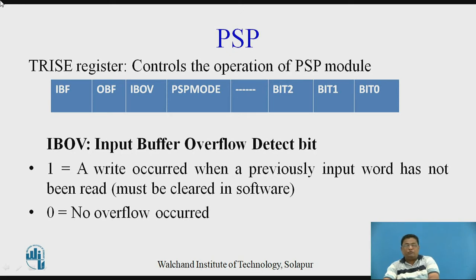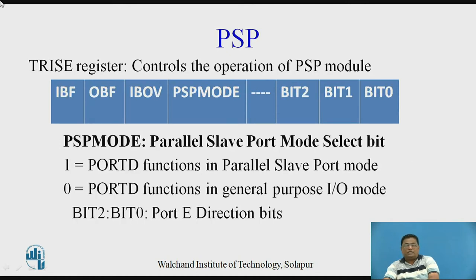IBOE equal to 0 means no overflow occurred. To decide the mode for Port D, we use the PSP mode bit. PSP mode must be set when we need Port D to operate in parallel slave mode. If PSP mode is reset, Port D will function in general purpose input/output mode. Bits 2 to 0 decide the Port E direction bits. To configure the RD bar, WR bar, and CS bar pins, these 3 bits must be set so these 3 control pins are configured as input pins.